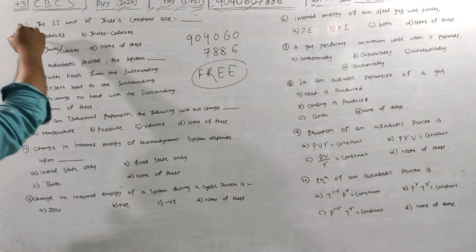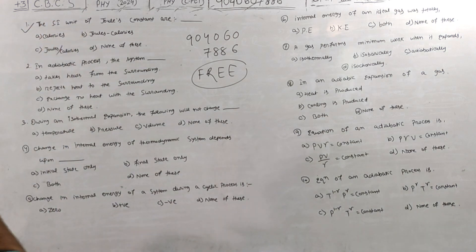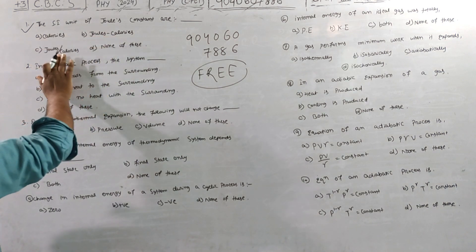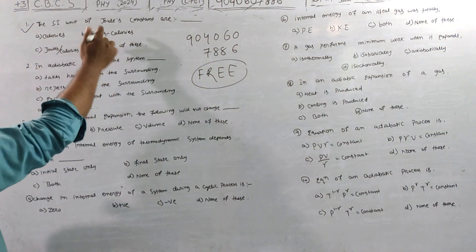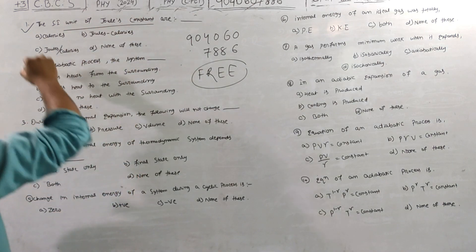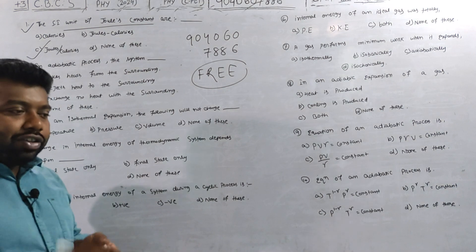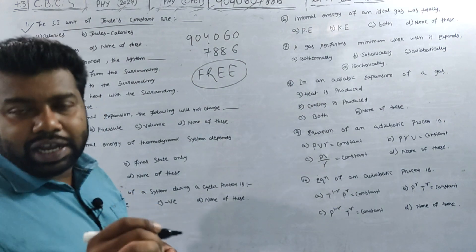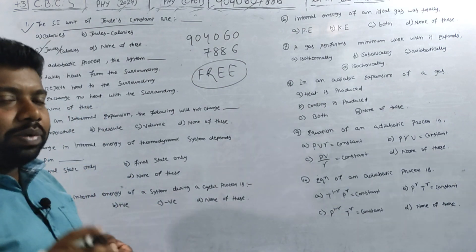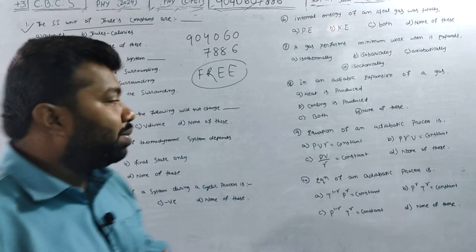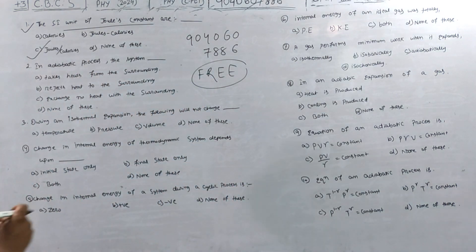The first question: What is the SI unit of Joule's constant? The options are Calories, Joules, Joules per Calories, and none of these. The answer is Joules per Calories. This is a direct question — you can copy and note it down. You can tick the answer and use it in the entrance exam.